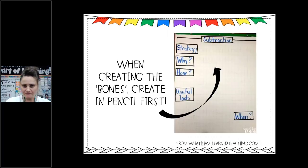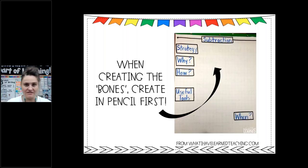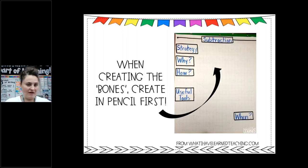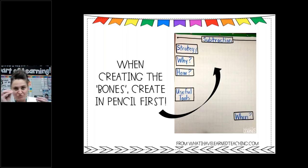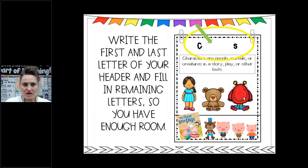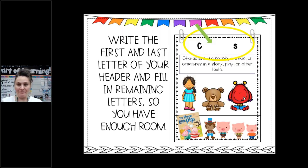When creating the bones, create in pencil first. Then go over it with marker to make sure you have enough space — there have been times I thought I had enough space and ended up squishing things in. You can also write the first and last letter of your header first and then fill in the remaining letters so you have enough room.